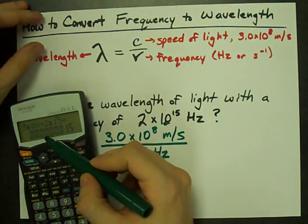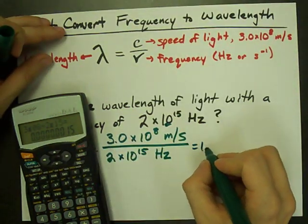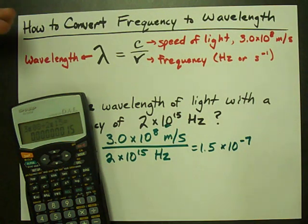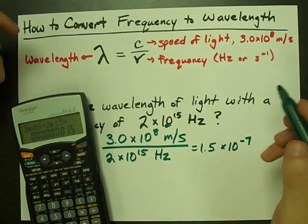This happens to be 1.5 times 10 to the minus 7. You could write it out if you want to, but why would you when you can write it in a short way like this.